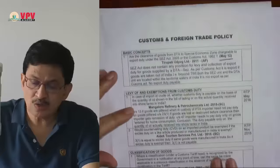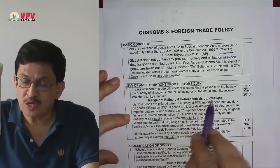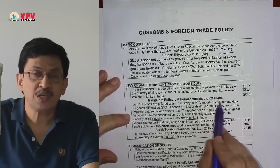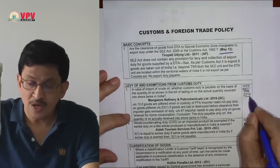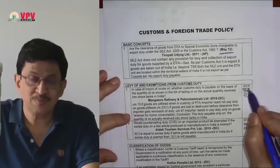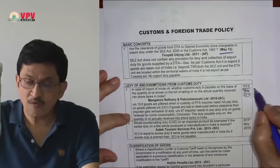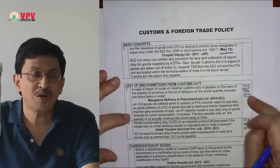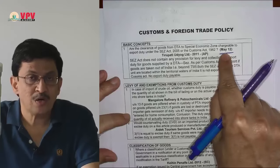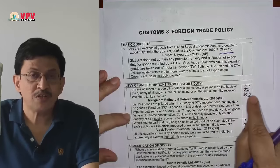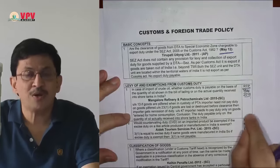The second marking you can observe is this: for the second case law, Mangalore Refinery and Petrochemicals Limited, 2015 Supreme Court, while including this case law in the case law book, the Institute has borrowed it from RTP May 2016. In all 24 case laws, wherever you see something like this, it means the Institute has copy-pasted that case law from RTP May 2016. These case laws should be considered more important than others.